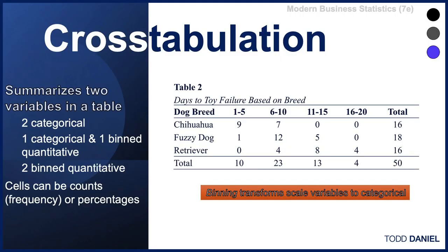In this example we see a table in which we have cross tabulated two variables. The first column is breed of dog — there are three categories. The columns are the days to failure of a gift toy that the dogs were given, broken down into categories 1 to 5, 6 to 10, 11 to 15, and 16 to 20. By looking at the cross tabulation we can answer questions like: how many Chihuahuas chewed up their toy in 1 to 5 days, or how many Retrievers chewed up their toy in 16 to 20 days. A cross tabulation summarizes two variables in one table.